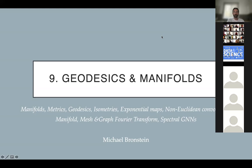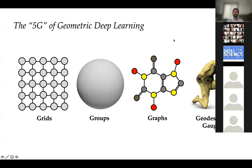Thanks everyone for joining. Today is the ninth lecture of our course on geometric deep learning, and we'll be talking about manifolds. As a reminder, we started with the 5G framework of geometric deep learning, describing grids, groups, and graphs in the last lectures. Today we'll be talking about the last G's — the geodesics and gauges — covering manifolds, measures, and geometric graphs.